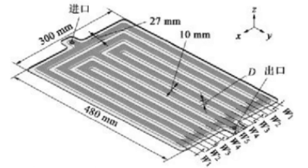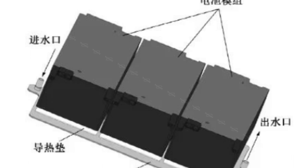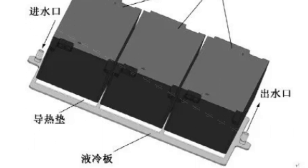The material of liquid cooling plate usually adopts 3003 aluminum alloy. The thickness of aluminum plate is 1.5 millimeter.